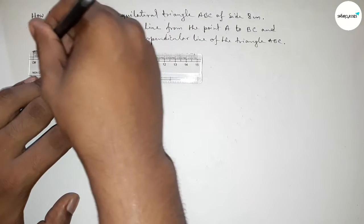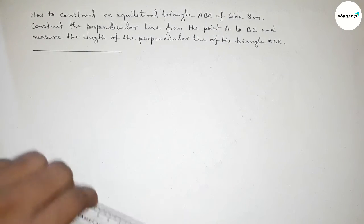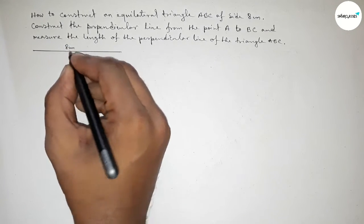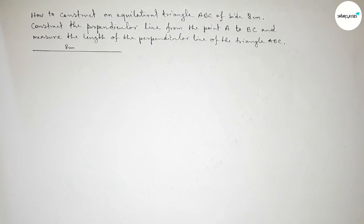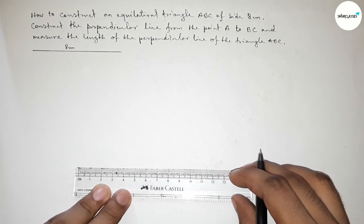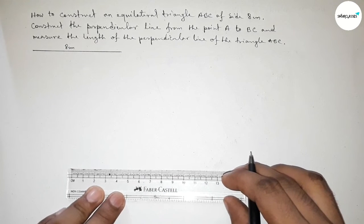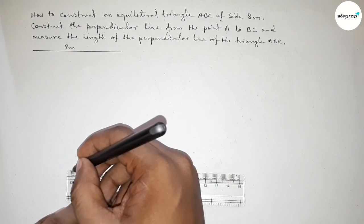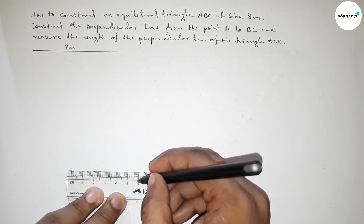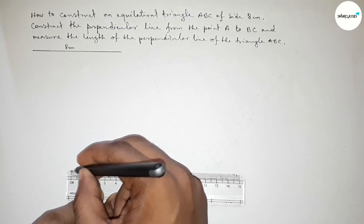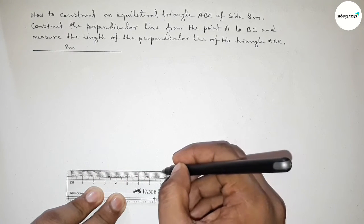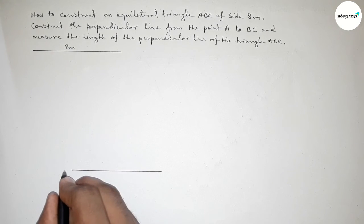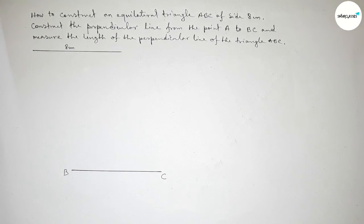This is 8 centimeter, so this line equals 8 centimeter. Now again we have to draw here a line of length 8 centimeter. This is an 8 centimeter line. Taking here point B and here C.